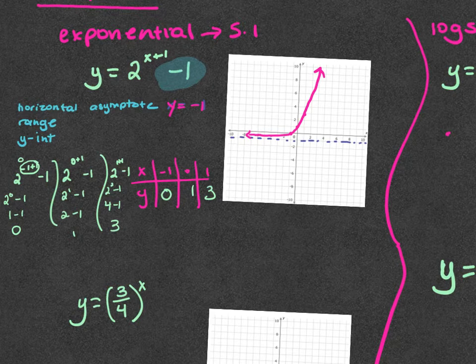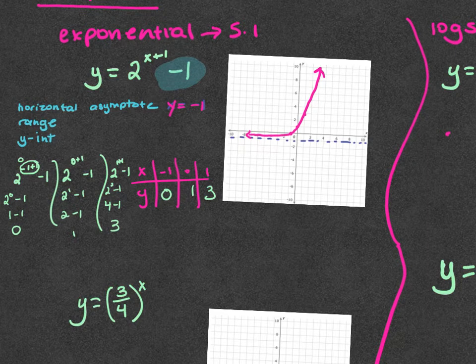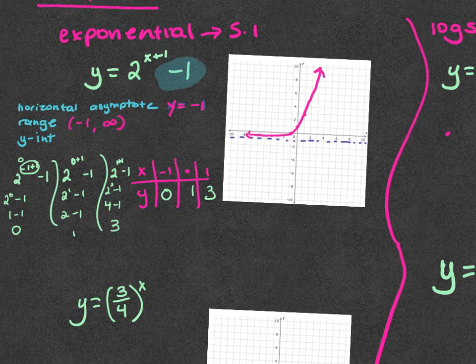If there's a negative in front it flips it upside down and your range is going to change. So what's the range? Negative one with a parenthesis — always parentheses — to positive infinity.